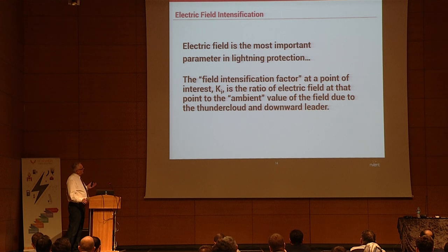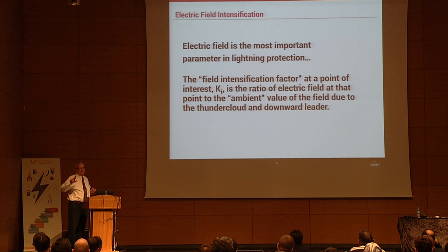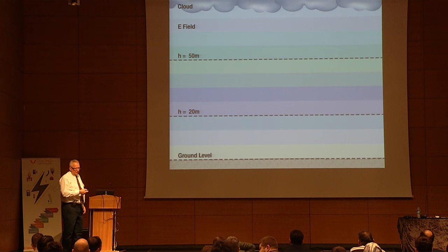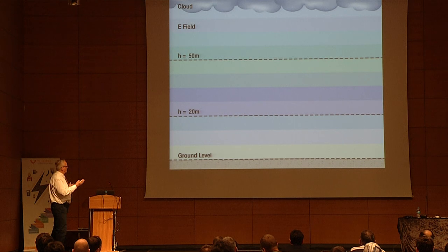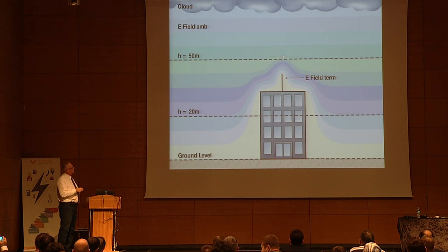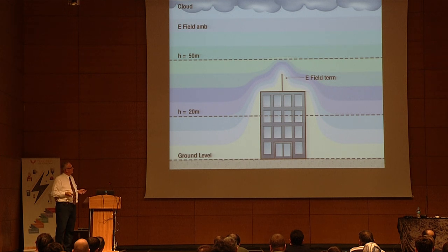Electric field is the most important parameter in lightning protection. The field intensification factor Ki is the ratio of the electric field at the point of interest to the ambient value due to the thundercloud and the downward leader. In a green field with no structures, field lines are uniform. But when you put a structure with a lightning terminal there, the field lines get compressed — the electric field is intensified by bringing the field lines closer together.